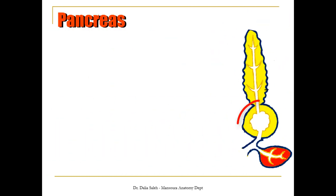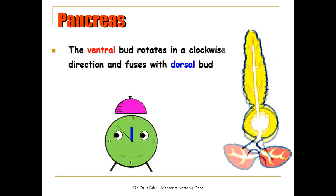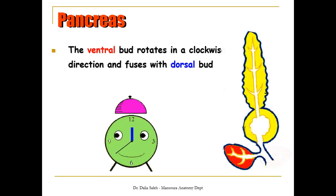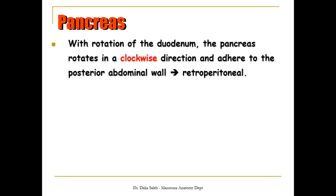In this cross-section, this circle represents the duodenum, this tube represents the bile duct, and here we can see the two buds — this is the ventral bud and this is the dorsal bud. The ventral bud rotates in a clockwise direction, almost 180 degrees, to fuse with the dorsal bud. Also, with the rotation of the duodenum, the pancreas rotates with it in a clockwise direction and adheres to the posterior abdominal wall, becoming a retroperitoneal structure.